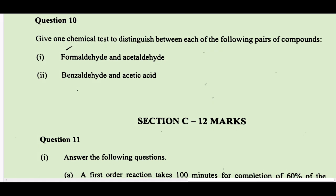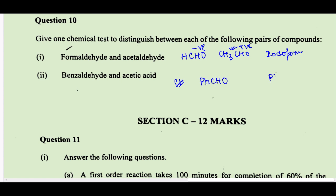To distinguish formaldehyde (HCHO) and acetaldehyde (CH₃CHO): we can use the iodoform test — acetaldehyde gives a positive iodoform test while formaldehyde does not. To distinguish benzaldehyde and acetic acid (CH₃COOH): we can add sodium bicarbonate — acetic acid will react.